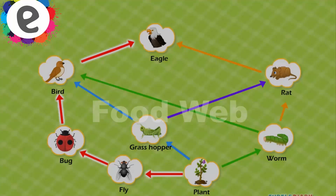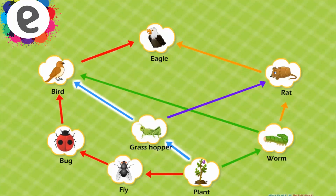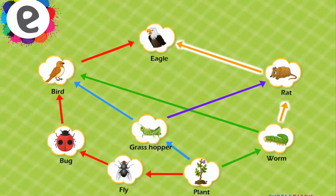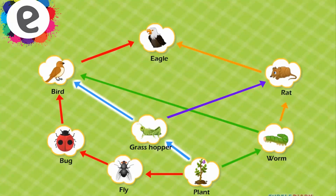Food web. The arrows in a food chain show the flow of energy. A network of many food chains is called a food web.